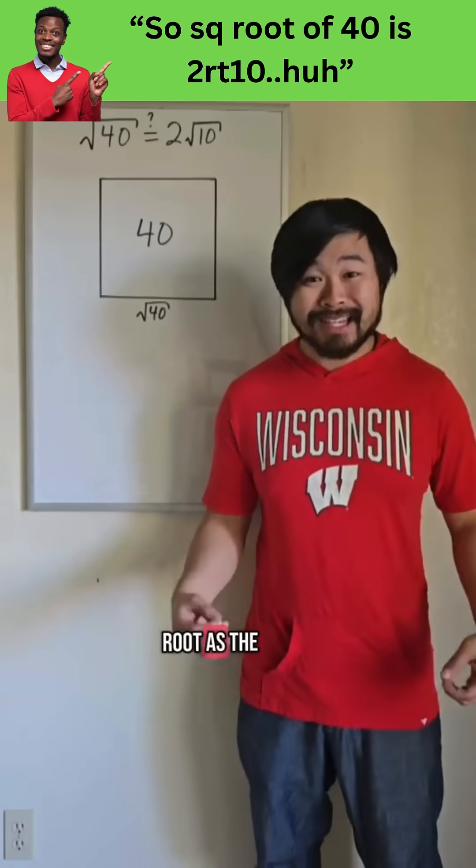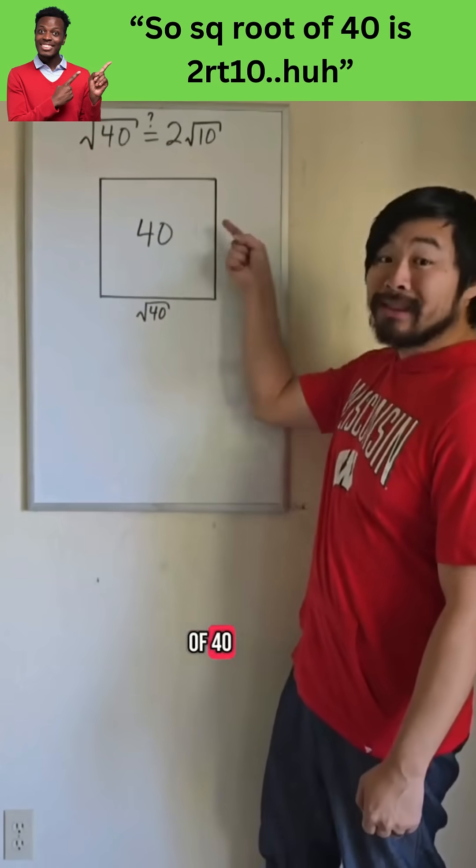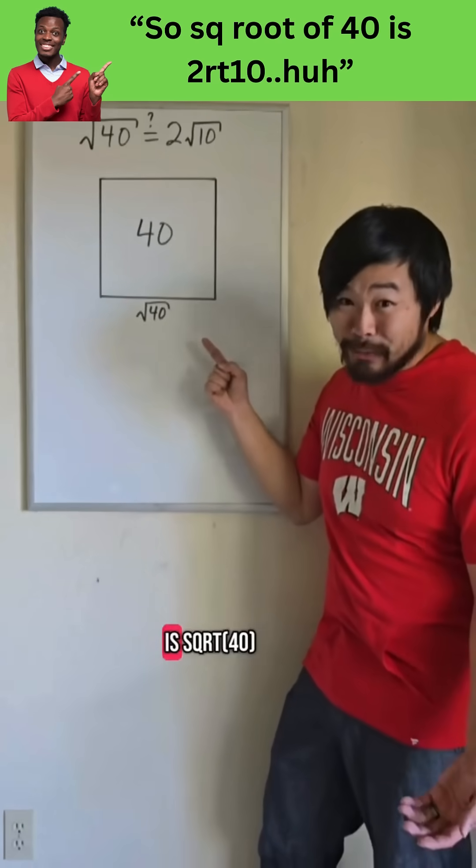We can think about a square root as the side length of a square. So if we have a square with an area of 40, the side length of that square is the square root of 40.